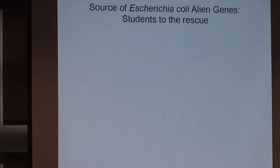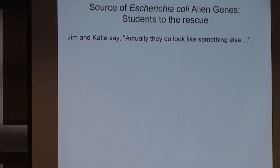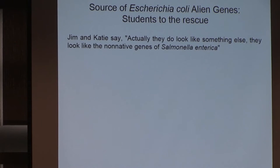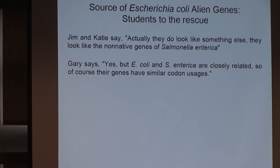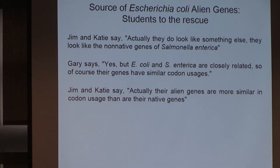Instead, the students came to the rescue and said, actually, these alien genes look like something else. We were looking at E. coli and they said, this looks like alien genes in Salmonella. I said yes, of course — E. coli and Salmonella are closely related, so of course the genes look similar. They said no — the alien genes of these two species are more similar to each other than are their vertically inherited genes.